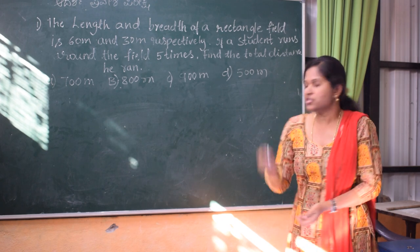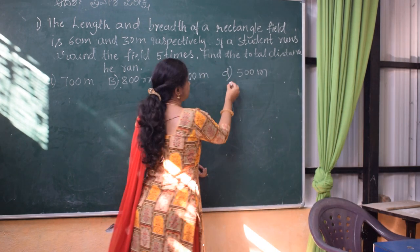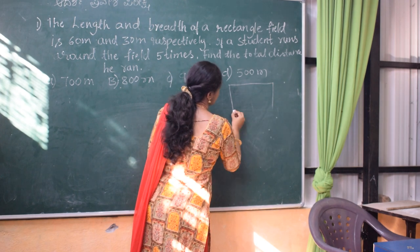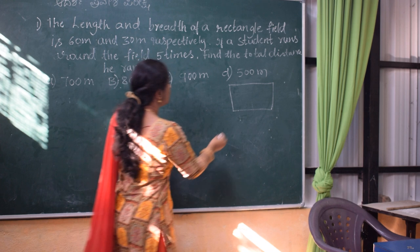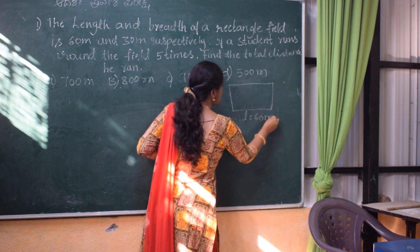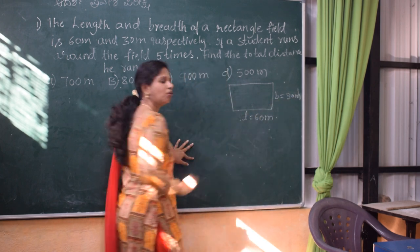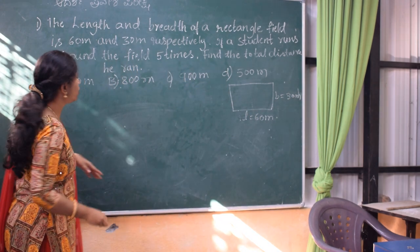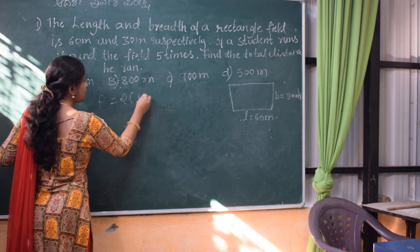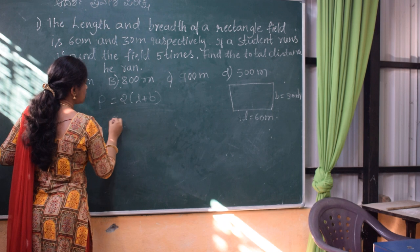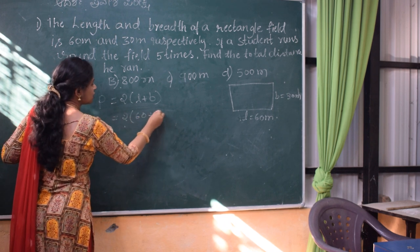First, we draw a rectangle. The length of the rectangle is 60 meters and the breadth is 30 meters. Now we will apply the perimeter formula: Perimeter is equal to 2 into (L plus B). So 2 into (60 plus 30).